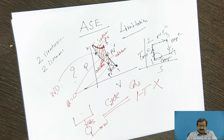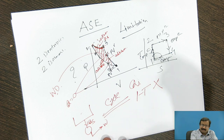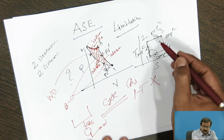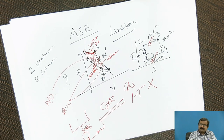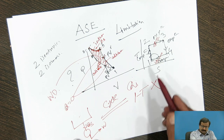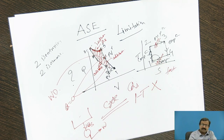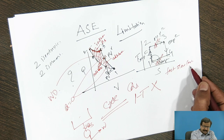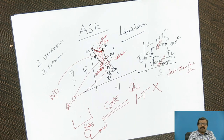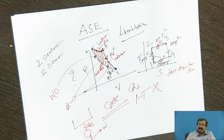Now the question is: is the Carnot cycle practically feasible? The isentropic process is a very fast process, while the isothermal process is a slow process. Again, isentropic is fast and isothermal is slow. So we have a fast process followed by a slow process, then fast followed by slow again. It is not possible to have mechanical linkage that can handle this particular process.